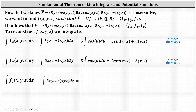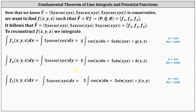Finally, we integrate 5xy cosine(xyz) with respect to z in a similar fashion. Performing u-substitution and writing back in terms of x, y, z, we have 5 sine(xyz) plus a function of x and y.